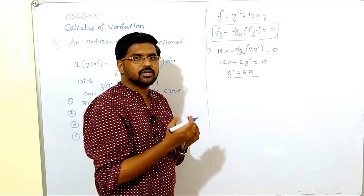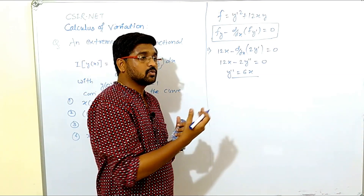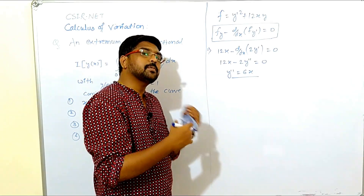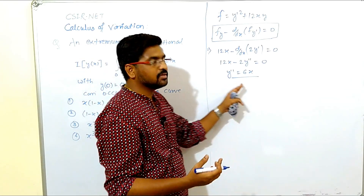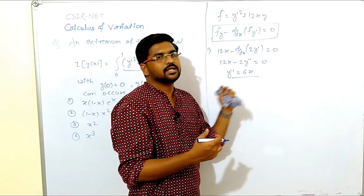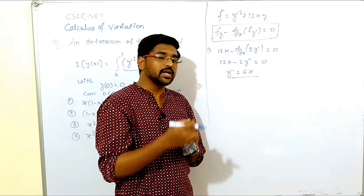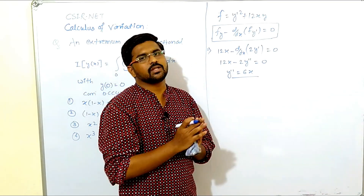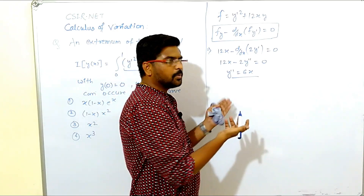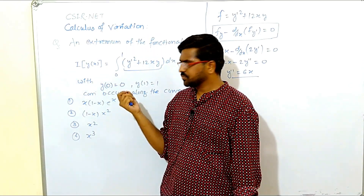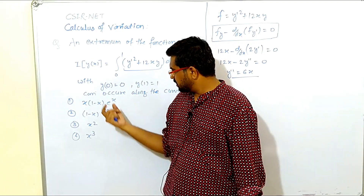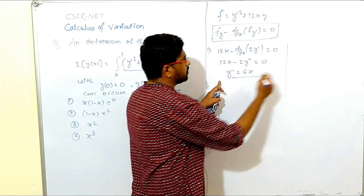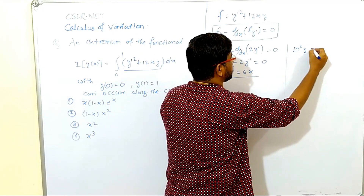We also need to find the particular integral because this is a non-homogeneous differential equation — the right-hand side is not zero. We find the complementary solution as well as the particular integral, combine them to get the general solution, then use the boundary conditions to find the arbitrary constants. The operator form is D²y = 6x.